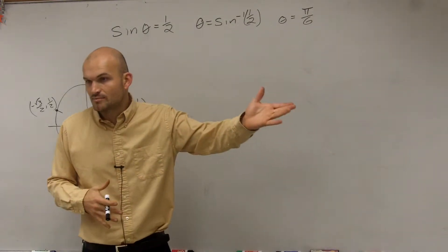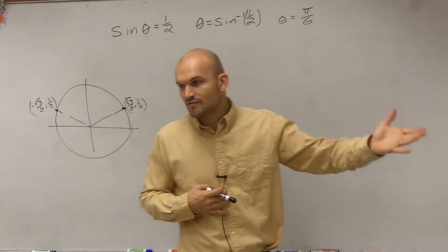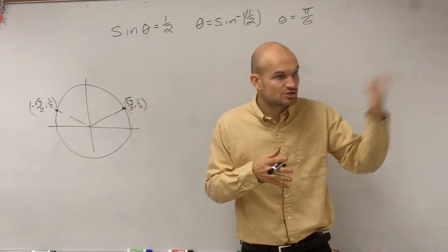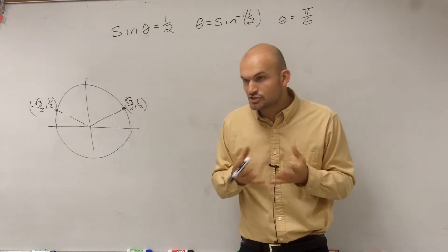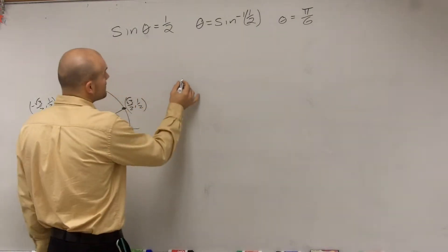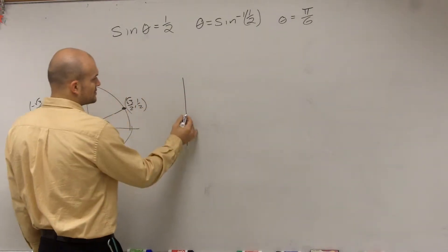We looked at the inverse of a quadratic - to write the inverse as a function, we put a constraint on it. We put a constraint on its range to consider it a function. Let's take a look at the sine graph and see how this affects it.